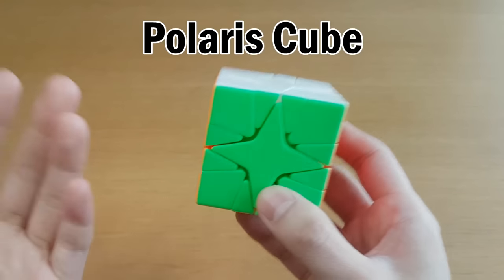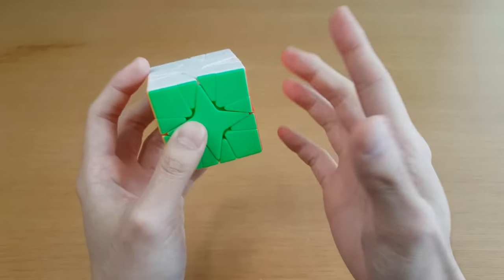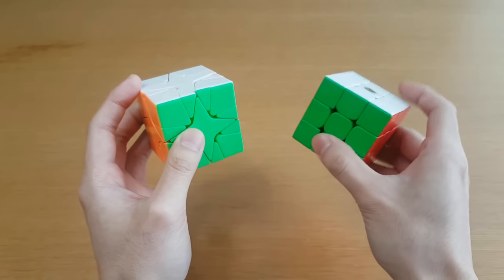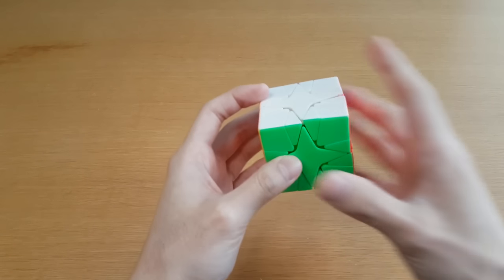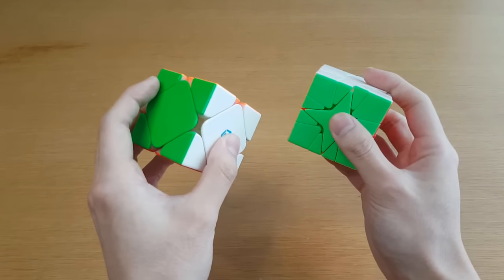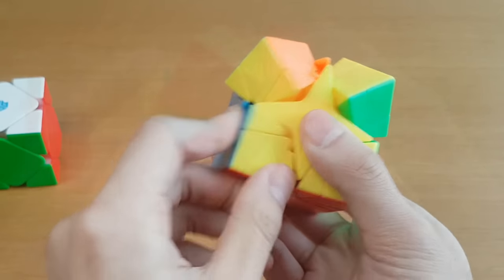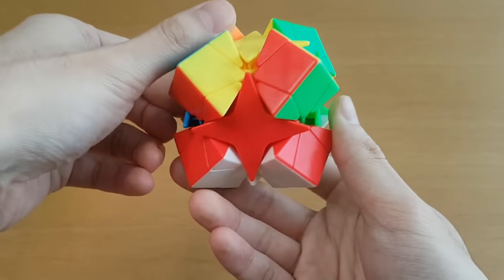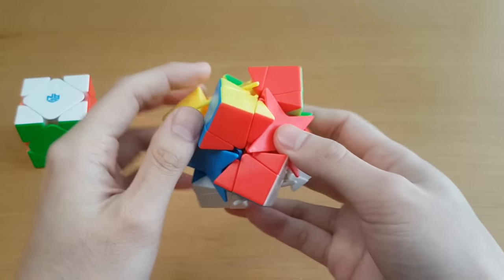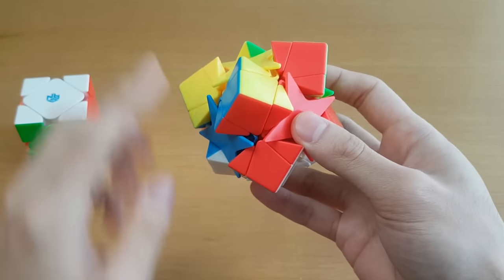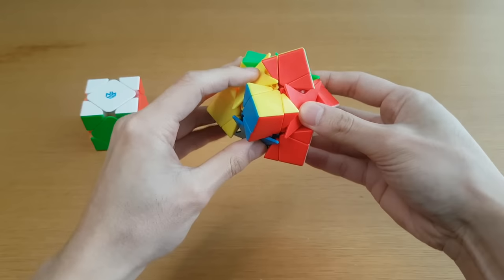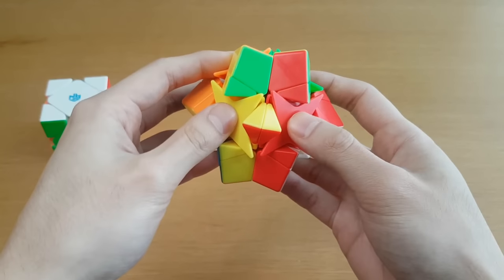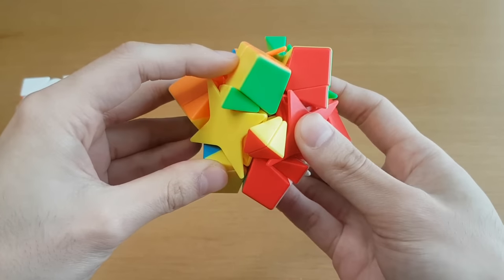This is called the Polaris Cube. This cube is not very similar to a normal 3x3 cube because of the way it turns. Instead, it is actually more similar to a cube. When you do an actual turn on this, it will turn along this line here, and it turns the entire puzzle in half.